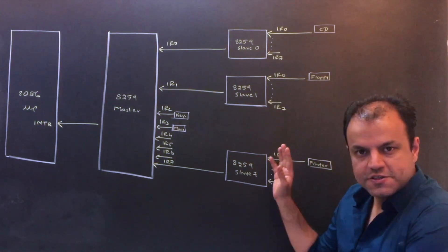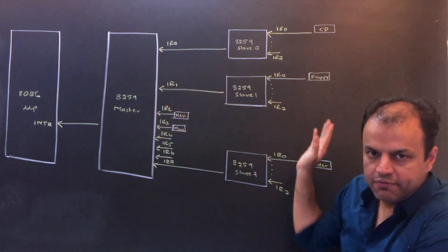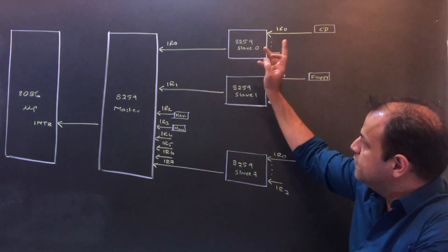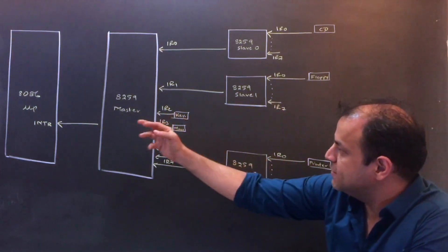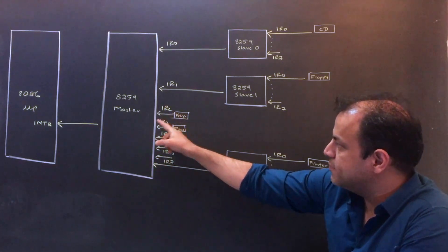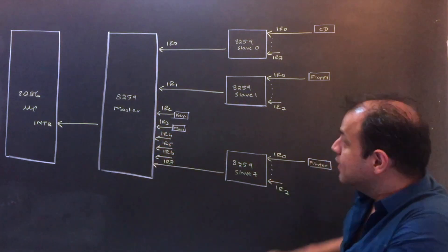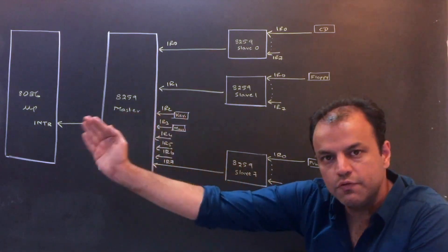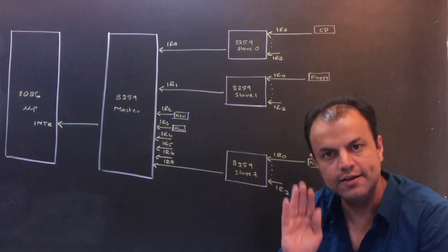Now let's first understand the flow of the diagram. If CD wants to interrupt the CPU, CD will interrupt the slave. Slave will interrupt the master. Master will interrupt the CPU. Floppy→slave→master→CPU. Printer→slave→master→CPU. Keyboard will interrupt the master directly, which will interrupt the CPU. Mouse will interrupt the master, which will interrupt the CPU. This is how all interrupts will flow to the CPU - no shortcuts. Everyone wants to interrupt the CPU but everyone has to go through this channel.